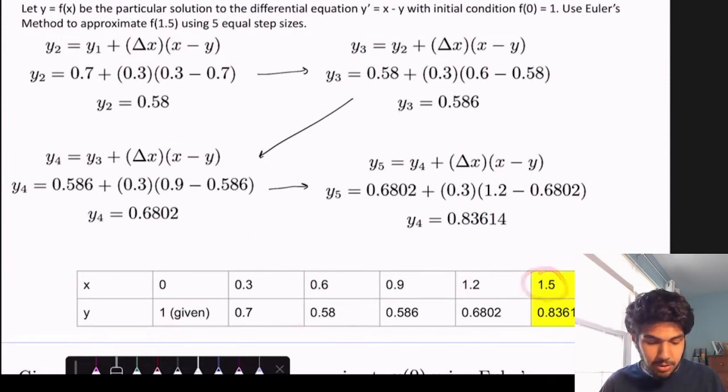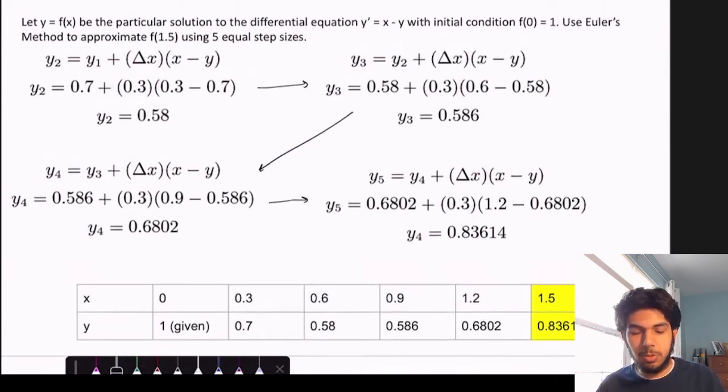And we continue doing that until we get to our value of 1.5. And once we're here, we have this value 0.83614. So that means we approximate f of 1.5 equals 0.83614. That's what Euler's method is.